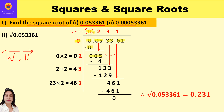Now the dividend is 5. For the divisor, we take the current quotient 0 and double it: 0 × 2 = 0. We put a blank after 0. We need to find a number to place in the blank such that the product is less than or equal to 5. We can keep 2 here: 2 × 2 = 4, and 5 − 4 = 1.